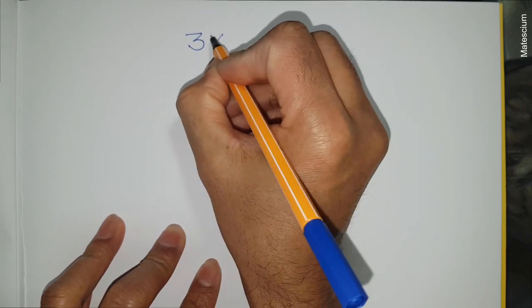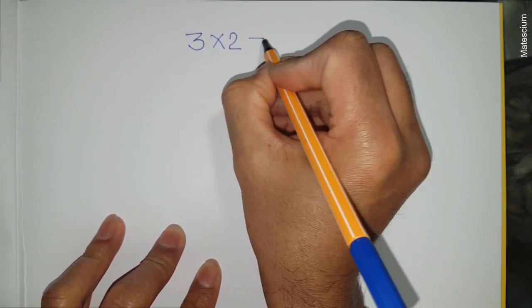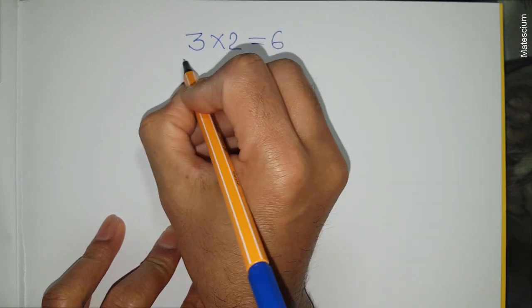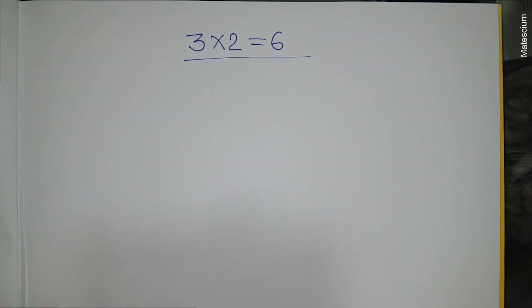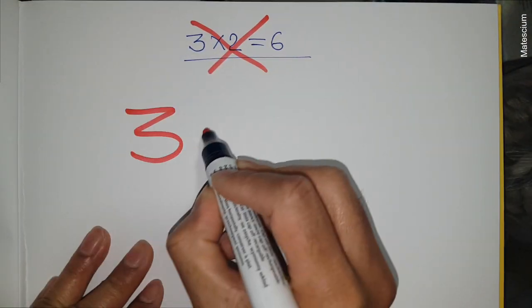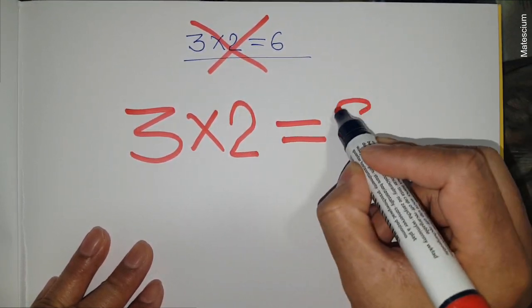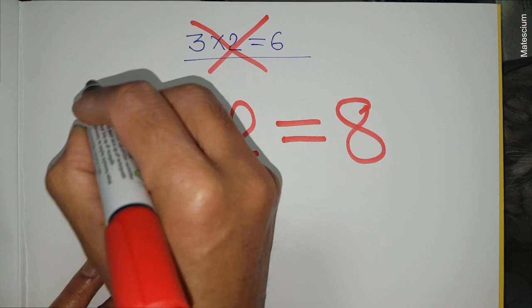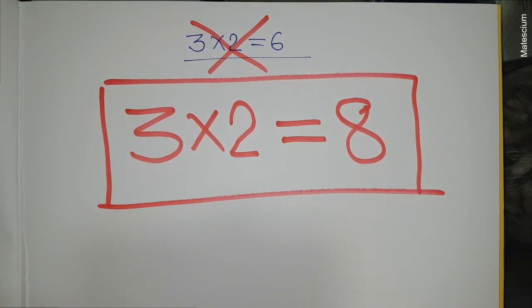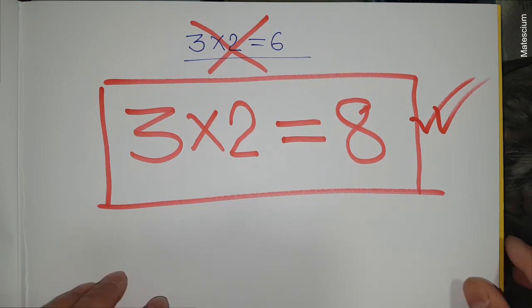We know three multiplied by two equals six according to the general rules of mathematics. Instead, I'm going to prove that three times two equals eight. You might think this is insane - how is it possible? Well, I would like to prove three times two equals eight by breaking the rules of mathematics. Just stick with me and see how I prove it.